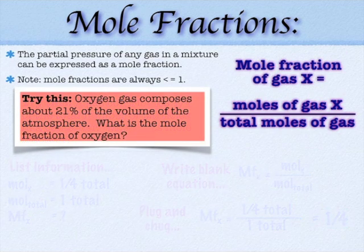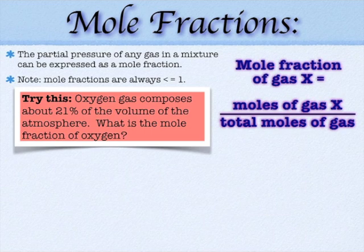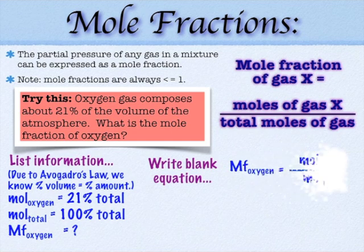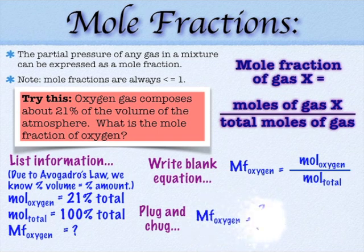But let's look at another example here. Oxygen's 21% of the volume of the atmosphere. What's its mole fraction? Well, don't freak out. Remember, Avogadro's principle states that the volume is proportional to the amount. So if you're 21% of the volume, then you'd be 21% of the moles also. And so I can solve for the mole fraction that way. Once I realize the connection there, it's really easy. 21 over 100, again, would be the mole fraction of 0.21.